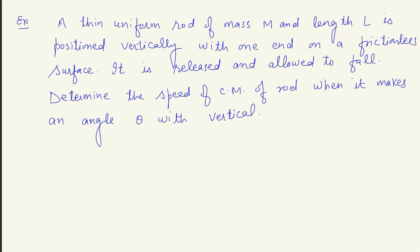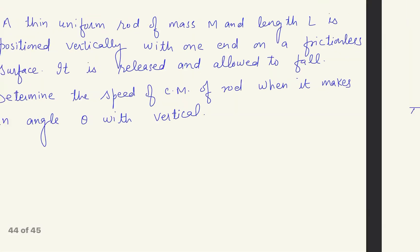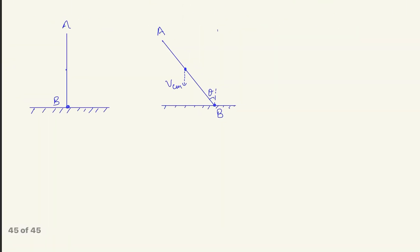We will try this one and check the solution. Initially the rod AB is in the vertical position on the frictionless surface, and here it gets released. Let's try to understand the case. If friction is not here, mu is equal to zero.